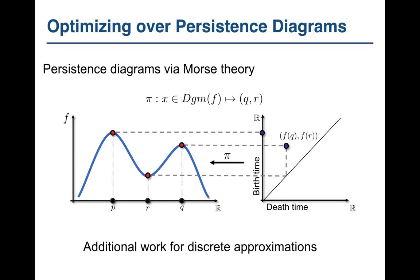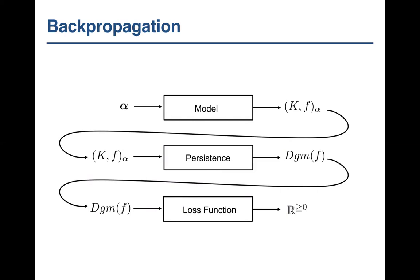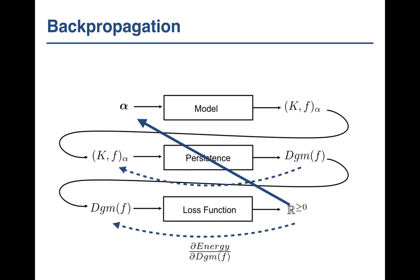Now that we have this map, we can use the idea of back propagation or the chain rule to optimize a cost or loss function back to our original model, which gives us our function. The energy back to the diagram is straightforward, the second map has already been described, and the third map tends to be directly on the space, so it's relatively easy to derive.